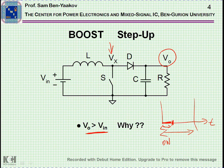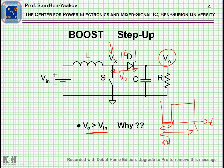Then the switch is released and turned off. Current is passing through here, and neglecting the voltage drop on the diode, we are going to see V out. So we are going to jump to V out for the rest of the time. This will be T off, and this is T on.